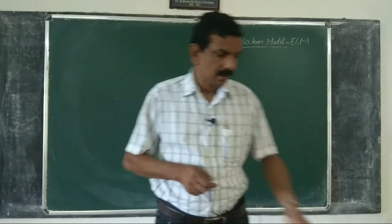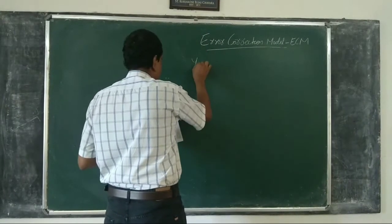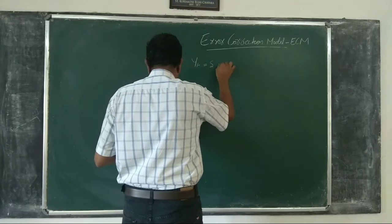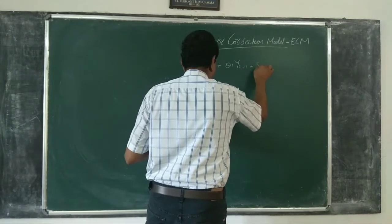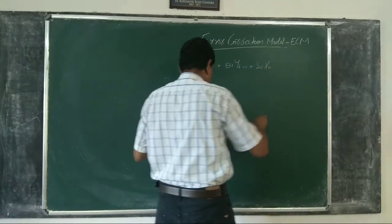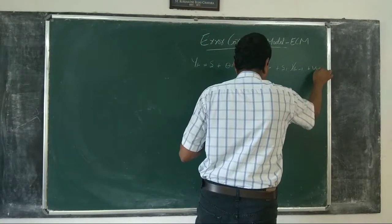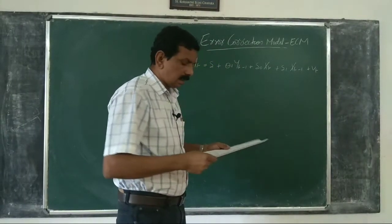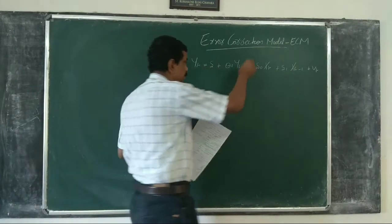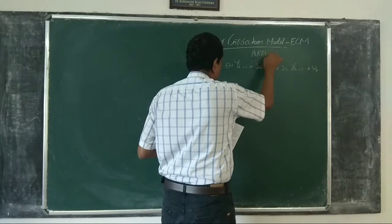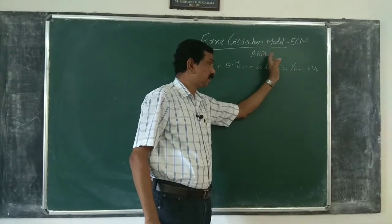To explain this, we consider an ARDL model: y_t = delta + phi_1 * y_{t-1} + delta_0 * x_t + delta_1 * x_{t-1} + v_t. As you can see, this is an ARDL model — auto-regressive distributed lag — because y_t depends on y_{t-1}, x_t, and x_{t-1}.